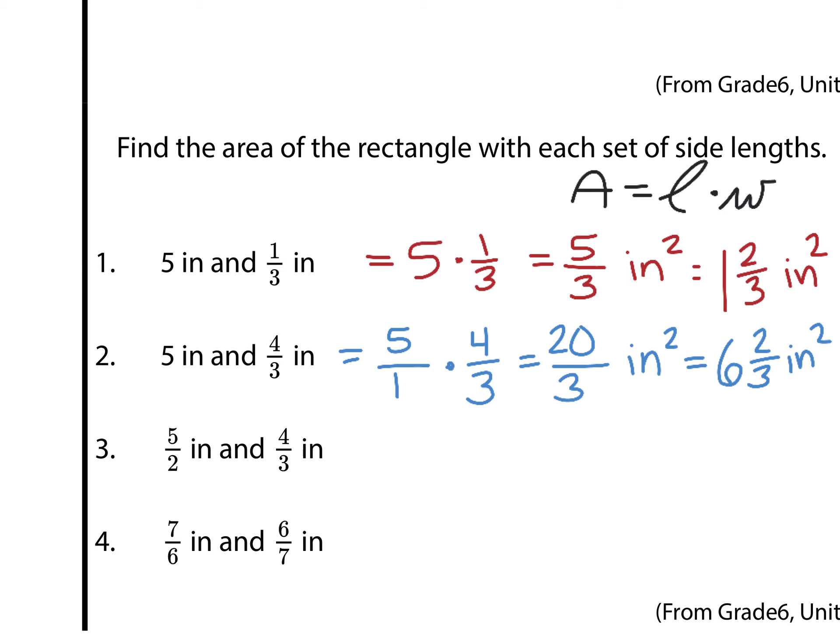Five-halves and four-thirds. Five-halves times four-thirds. And I know there's many ways to multiply fractions here. You could multiply straight across and then simplify it. It's certainly one way, but you get ten-thirds square inches, which is the same thing as three-and-a-third square inches.